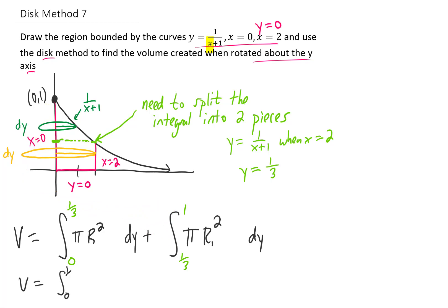This first integral should be the simpler of the two. When y is between zero and one third, you'll notice that we're in this region here, and in this region, the radius of our disk is just two.